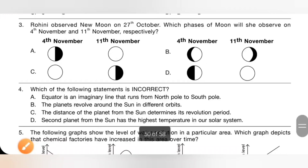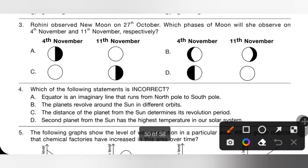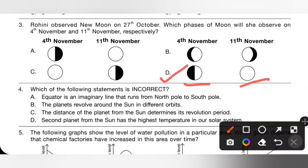Question 3: Rohini observed a new moon on 27th October. Which phases of moon will she observe on 4th November and 11th November respectively? On 4th November she will observe the 1st quarter moon, and on 11th November she will observe full moon. Option D is the correct answer.